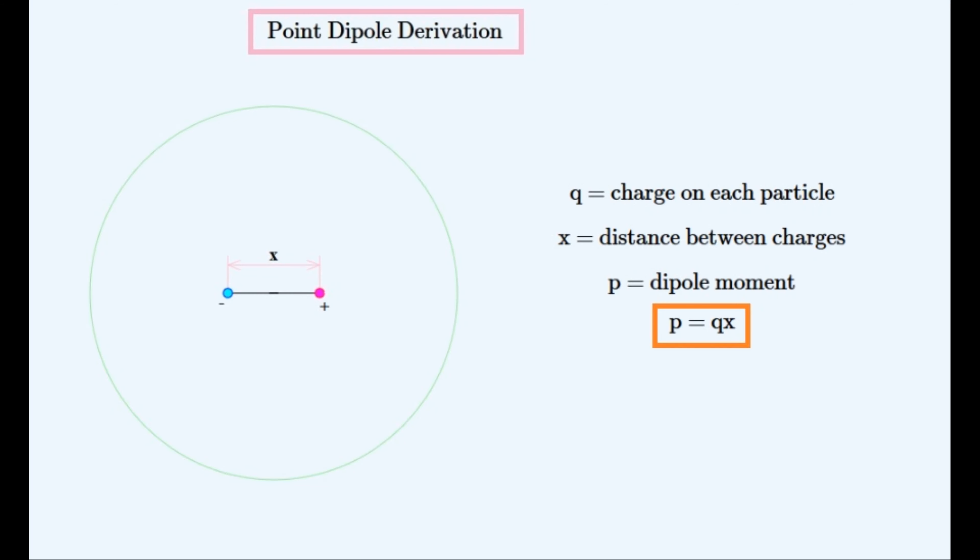It is a point dipole when this sort of dipole is located at a point with a non-zero and finite dipole moment. This would mean that the two charges would be infinitesimally close, while the charges would grow near infinitely large. In this video we will derive the formula for the electric field surrounding a point dipole like this.